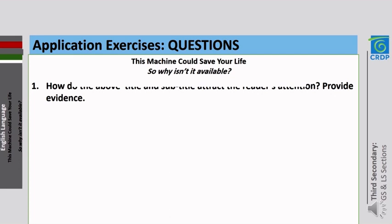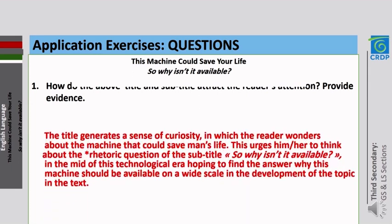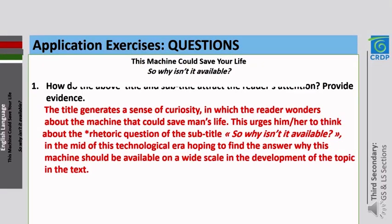The first application exercise is related to the title of the lesson: 'This machine could save your life — so why isn't it available?' The subtitle is stated in the form of a question known as a rhetorical question. The writer uses such a question in order to trigger the thinking of the reader, to make him or her more curious and more eager to know more about this innovative machine. The title generates a sense of curiosity in which the reader wonders about the machine that could save a person's life, urging them to think about why it isn't available in this technological era.